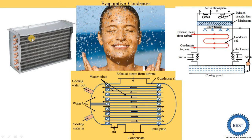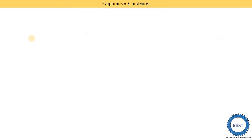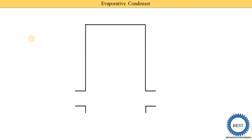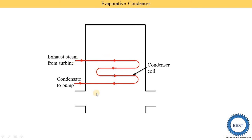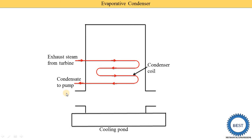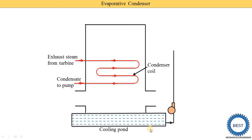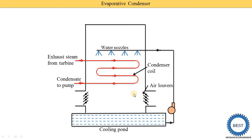I will explain the components of the evaporative condenser and then the working. This is the outer part of the evaporative condenser. Inside, there is a condenser coil. For a power plant, exhaust steam from the turbine enters and condensate exits to the pump. For refrigeration, vapor-state refrigerant from the compressor enters and liquid refrigerant exits. For cooling, a pump sprays water from a cooling pond at the bottom onto the condenser coils, and air is also supplied from the bottom.